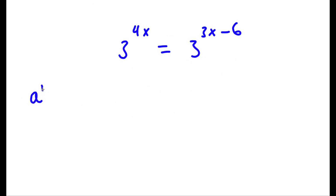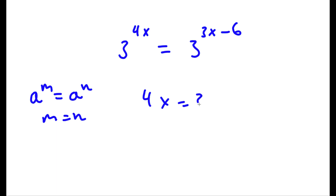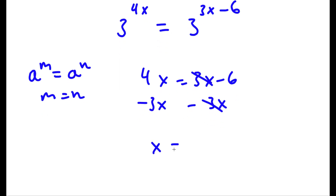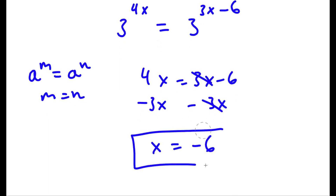Now, if I have something in the form a to the power of m is equal to a to the power of n, then this means that m is equal to n. So in this case, 4x is equal to 3x minus 6. All I have to do to solve this is subtract 3x on both sides. These two cancel out, and I'm left with x is equal to negative 6. So this is my answer.